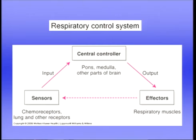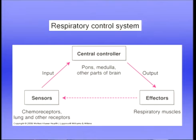Let's look first at the respiratory control system. We can start with the sensors at the bottom left — these look at gas exchange in the blood. We have chemoreceptors that look at the levels of PO2, PCO2, and pH in the blood. There are also receptors in the lung which look at the movement of the lung, and other receptors, for example from exercising muscles.